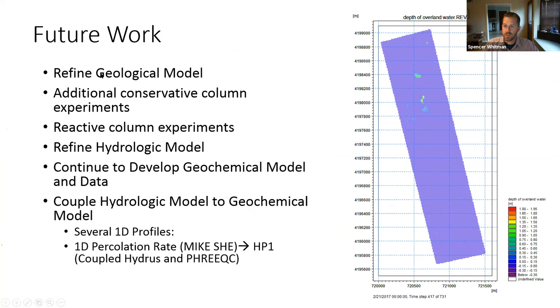Future work for this project includes a little bit more refinement to the geological model, maybe some more conservative column experiments, reactive columns. The hydrologic model needs a little bit more work. Finally, once all these experiments are completed, the data will be put into a coupled hydrologic model. The current plan is to use the percolation rates from our distributed model showing how percolation is changing over the watershed of the site. We have high percolation in the pits and relatively less percolation outside of them. Those will be fed into 1D column models which are coupled HYDRUS and PHREEQC models. So unsaturated zone fluid flow as well as reactive chemistry model.